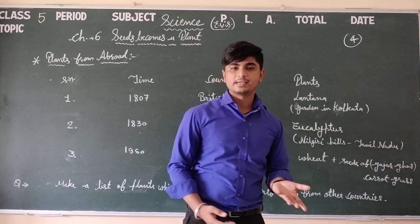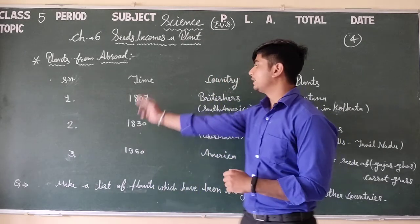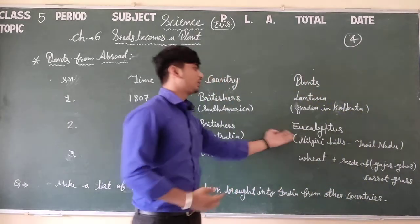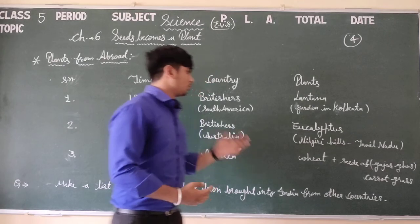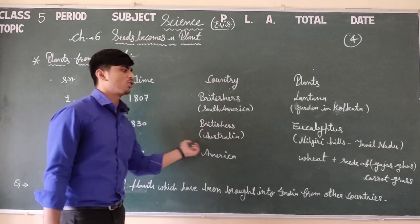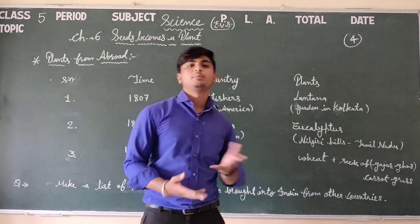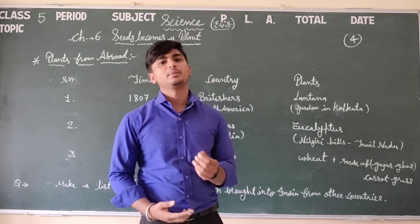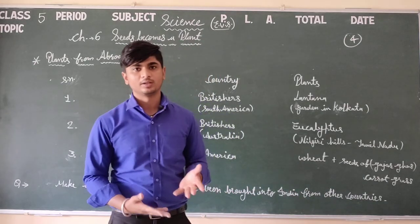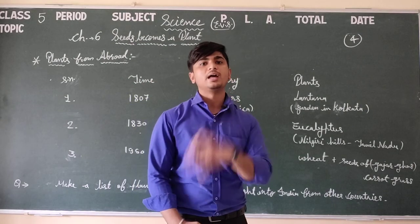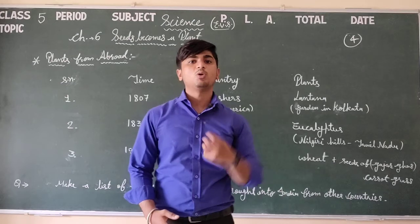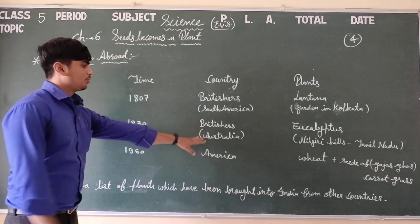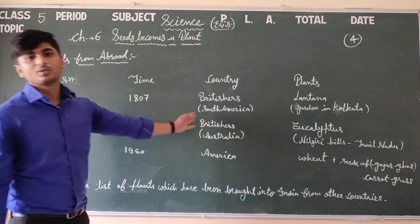Number two: in 1830, the Britishers came to India and brought a plant from Australia — Eucalyptus. So Eucalyptus was brought in 1830 by the Britishers from Australia.